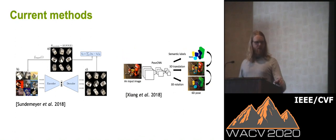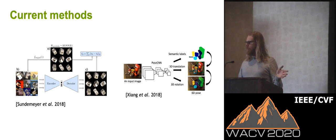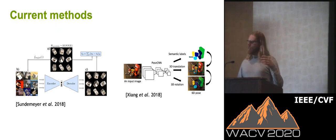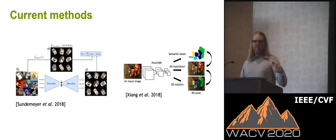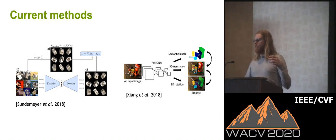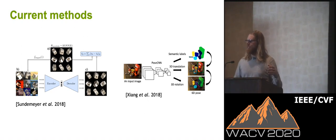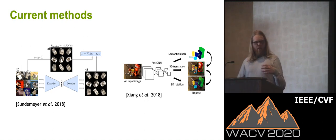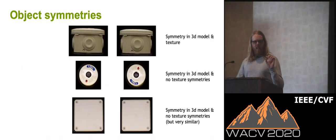This has been approached differently in the literature. On the left-hand side, you have an autoencoder using a code and a dictionary to retrieve the pose of the object. On the right-hand side, you could directly regress to the pose. In our work, we want to look at objects that have symmetries.